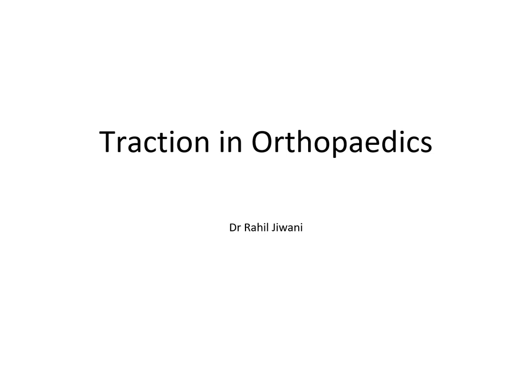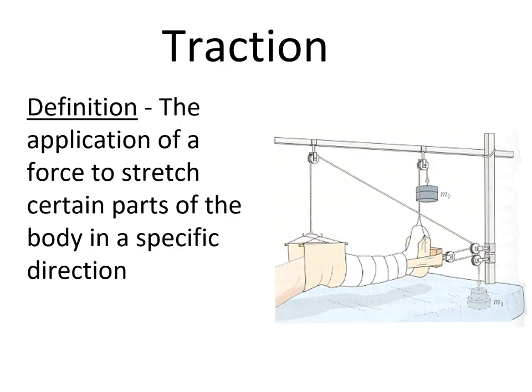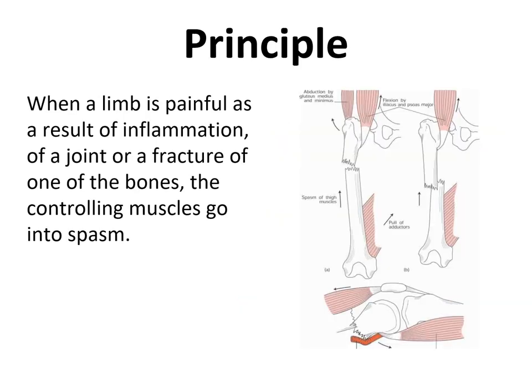Today we'll be discussing the topic of traction in orthopedics. The definition of traction is the application of a force to stretch certain parts of the body in a specific direction. As we can see here, this is your right lower limb — this is the femur, here is the tibia. If there's a fracture in the femur, we apply traction on the lower part, pulling the body in a specific direction.